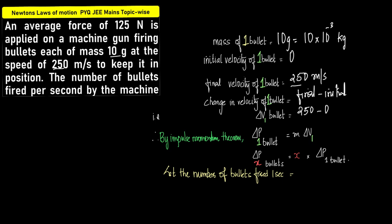If one pen costs two rupees, then two pens will cost two into the cost of one pen — simple, that logic. Now, let us assume that the number of bullets fired in one second is X. In which case, delta P of X bullets would be equal to X into delta P of one bullet.